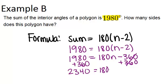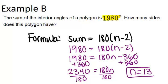Finally, divide both sides by 180, and you get an answer of 13, which means that n, the number of sides, is 13. So how many sides does this polygon have? It has 13 sides.